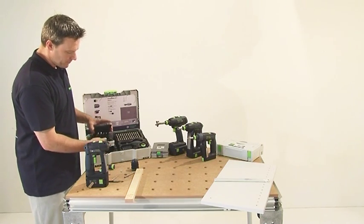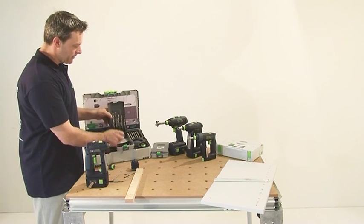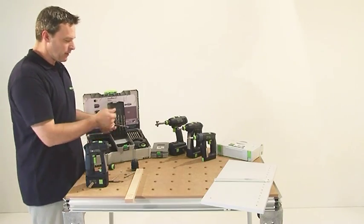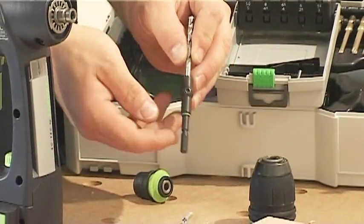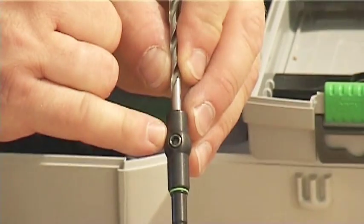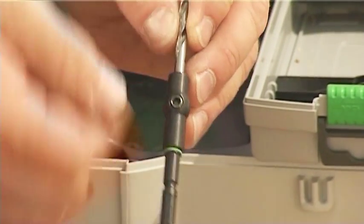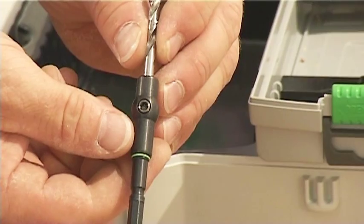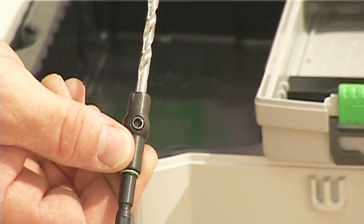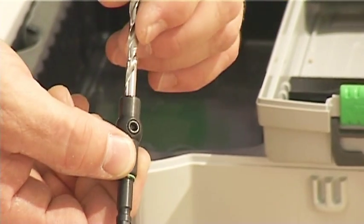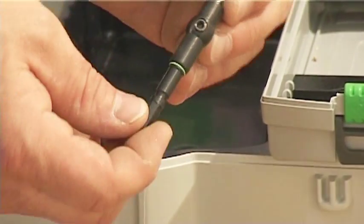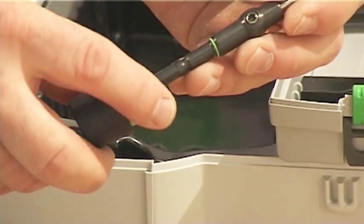Of course, a drill set is included as well. The drill set consists of the most common sizes. As you can see, these drills are equipped with a special receptacle. This receptacle has a hexagon socket. By loosening the hexagon socket, I can remove the drill very quickly to sharpen or replace it, for example. The hexagon socket is an adaptation to the Centrotec system.